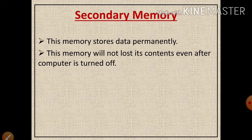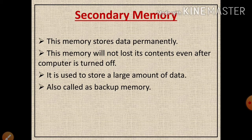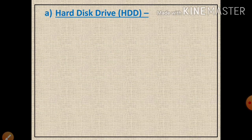This memory stores a large amount of data, hence it is also called backup memory. The examples of secondary memory are cloud storage, hard disk drive, pen drive, CD, DVD, etc. Now we are going to learn about the hard disk drive in detail.